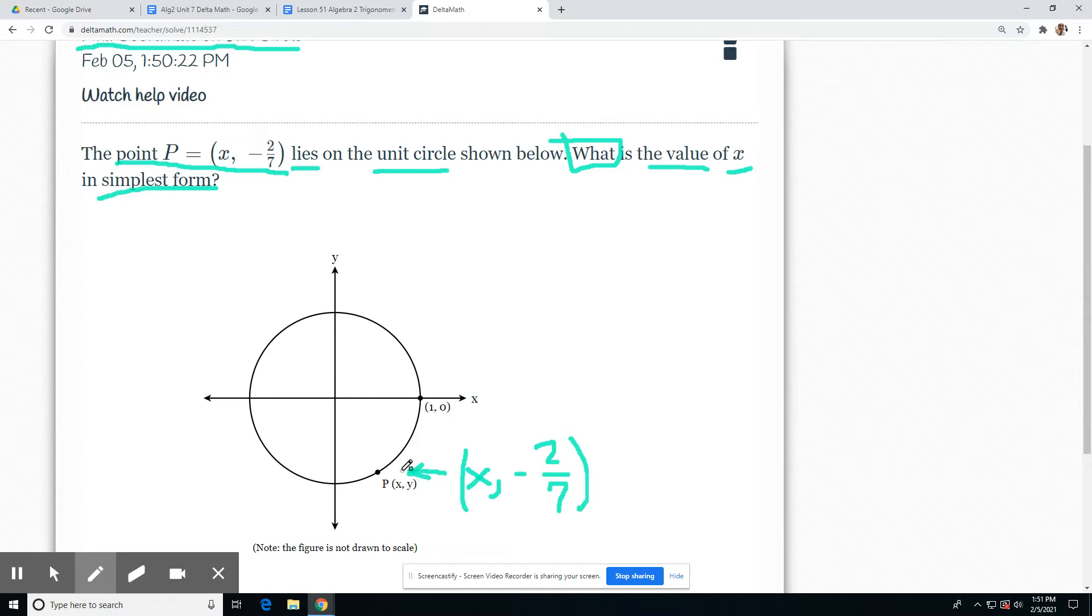The first thing we kind of want to do is we always draw our triangle with reference to the X axis. So that means the triangle would go this way and this way. You want to make sure it should be straight. So this is our triangle.